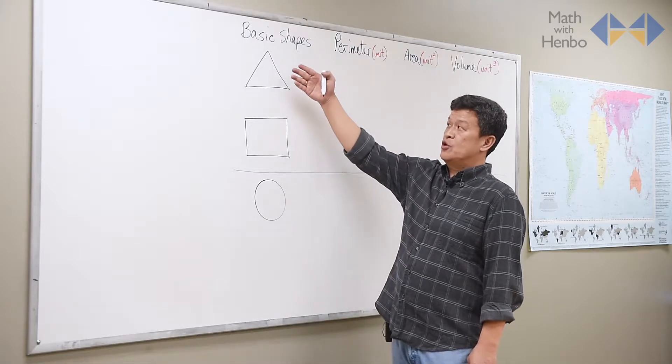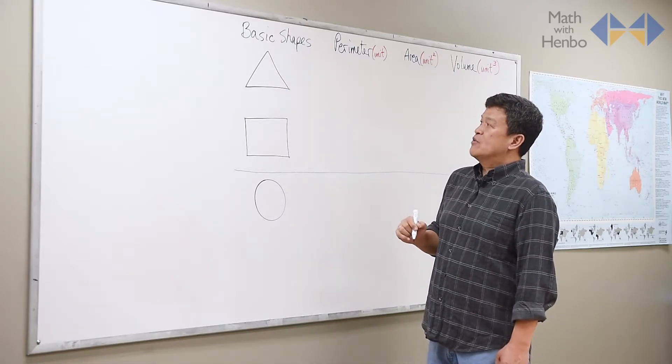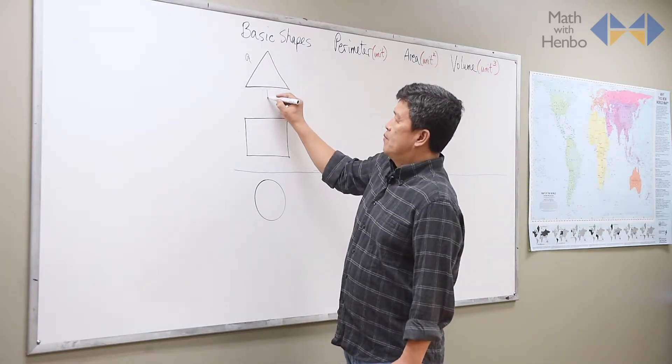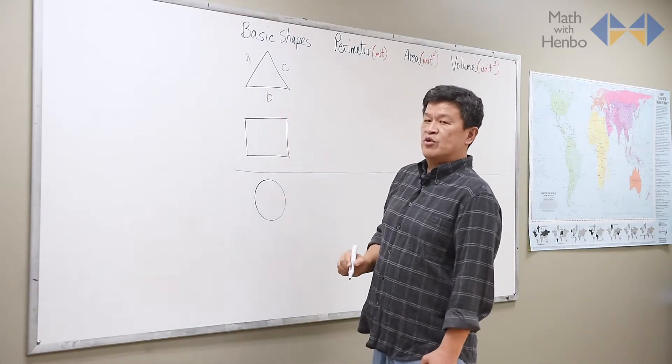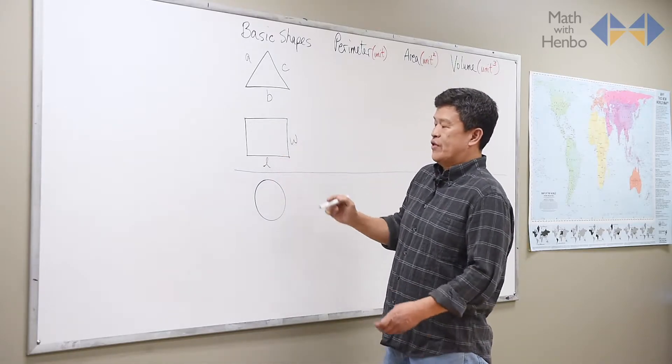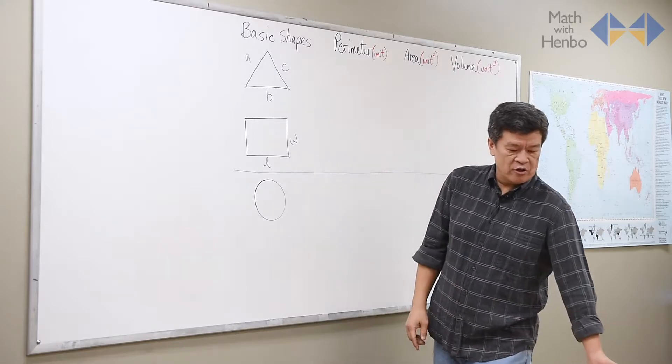Let me just show you the triangle and the rectangle first. When it comes to labeling it, just A, B, and C will do for the triangle. And length and width, obviously, for a rectangular object.